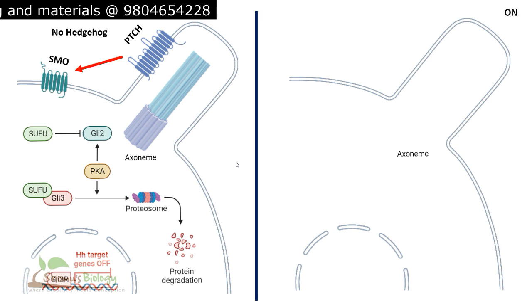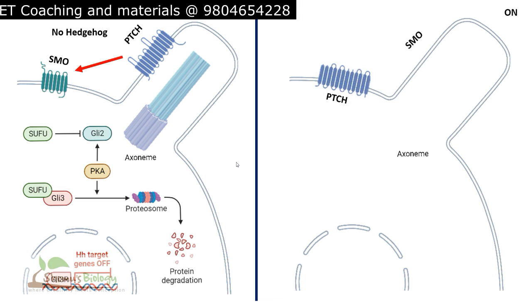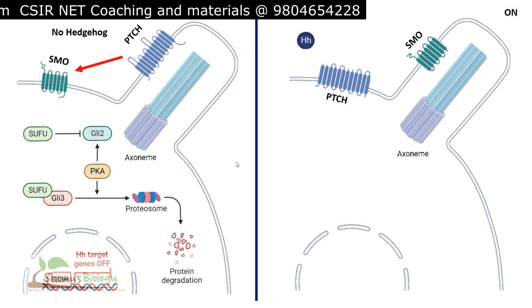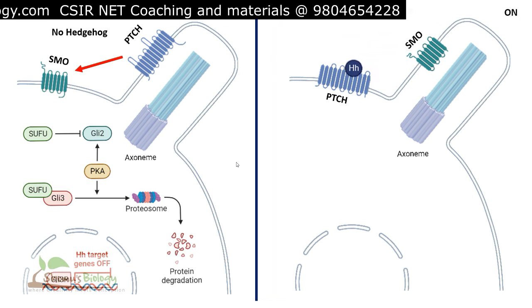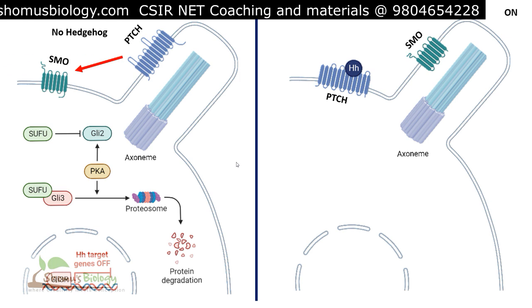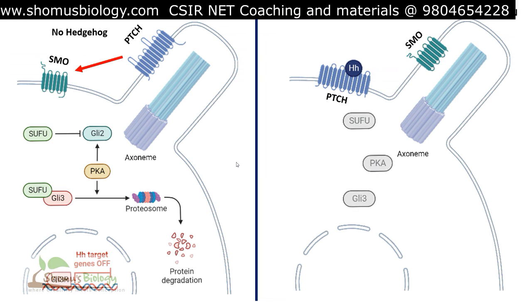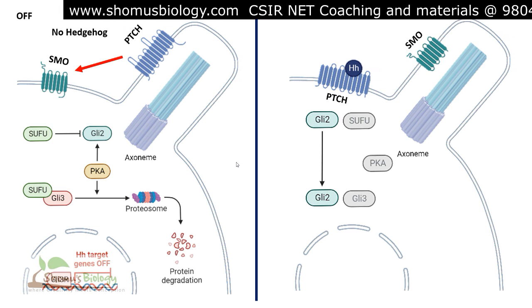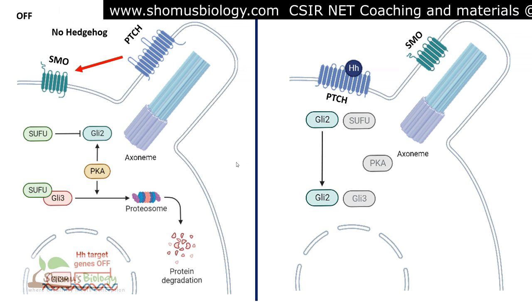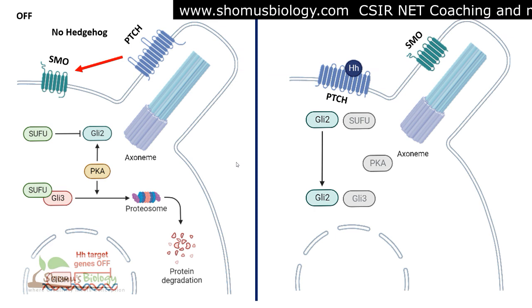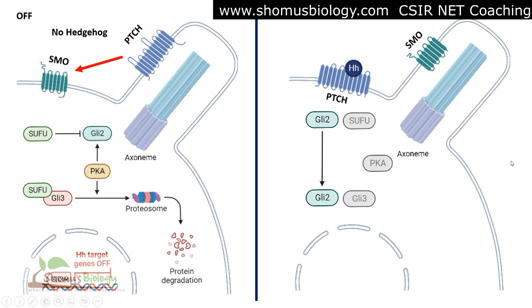On the right-hand side, where the Hedgehog signaling molecule is present, there is a Patched protein and also a Smoothened protein. When Hedgehog is present, it initiates interaction with the Patched receptor. Due to this interaction, Patched can no longer inhibit Smoothened. In this case, SUFU, PKA, and GLI3 all become inactive — they don't have any role to play — because SUFU cannot inhibit GLI2 and cannot trigger GLI3 degradation when the Hedgehog signaling molecule is bound.